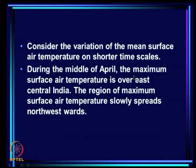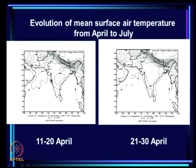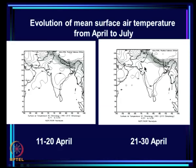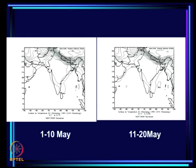On shorter time scales, during the middle of April, the maximum surface air temperature is over east-central India. The region of maximum surface air temperature slowly spreads northward — from 11 to 20th April, it is spreading northward, and from 21 to 30th April it continues spreading. By the first half of May, the region of maximum surface air temperature spreads to cover northwest India as well.